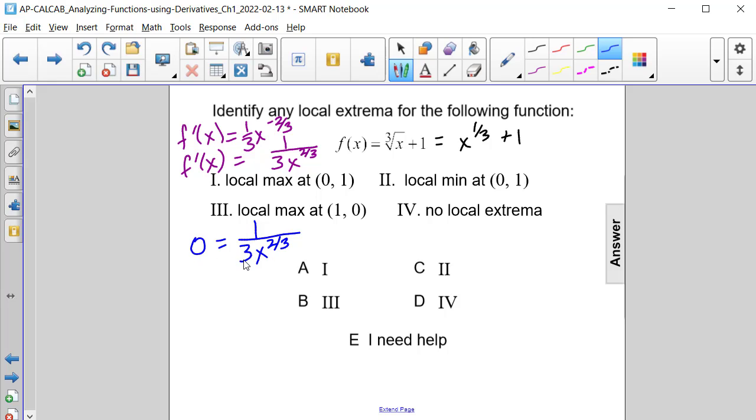If we cross multiply we'll get 0 equals 1, so we can't really do that. But we can determine that if x is 0 here, then this rational function will be undefined. So the critical value or critical point occurs when x equals 0.